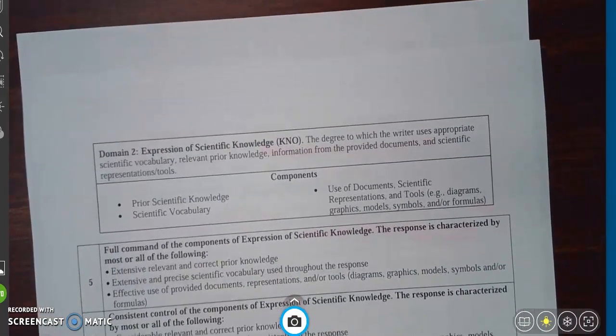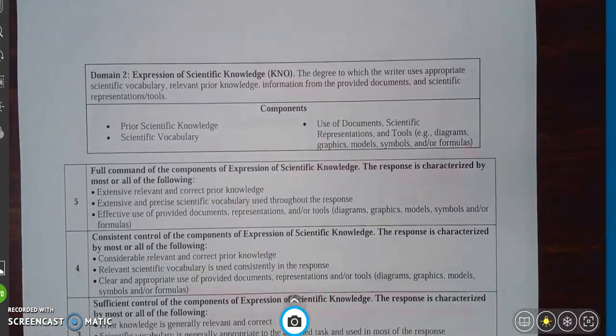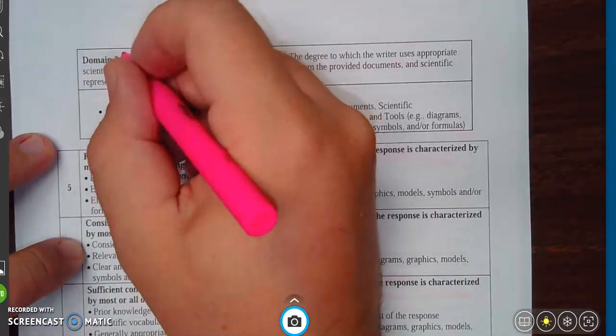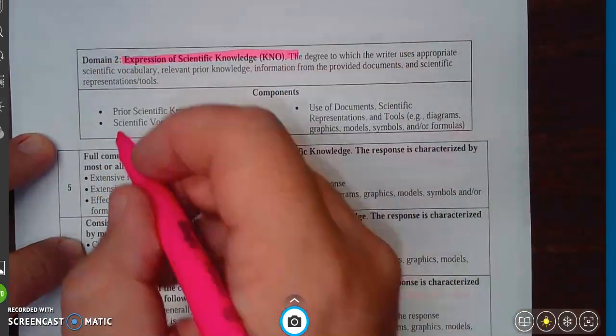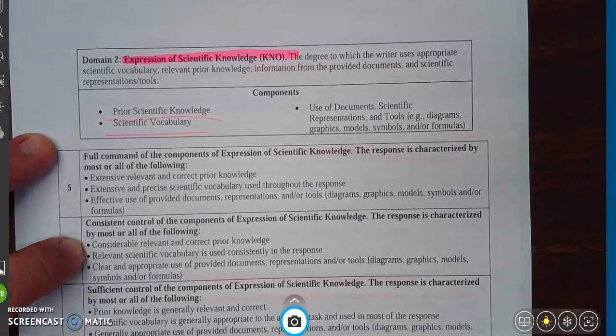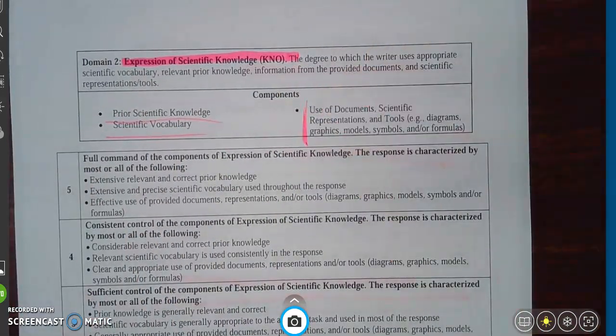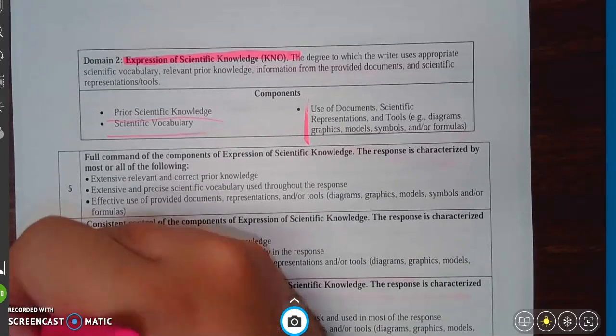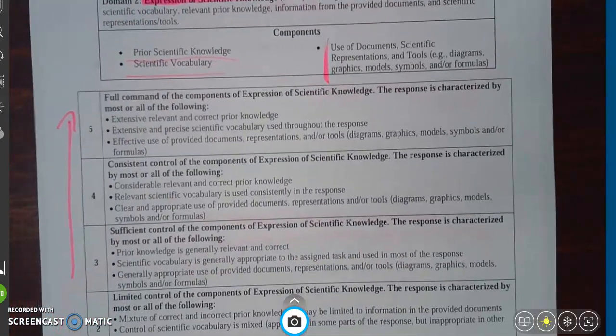Domain two is very similar. The knowledge, this is similar to the social studies ones that we talked about as well. This is your prior knowledge, your scientific vocabulary, and then the documents, the scientific representations and tools, whether it's diagrams, graphics, models, symbols, and or formulas. So again, here we're going to focus in this 3-4-5 section.